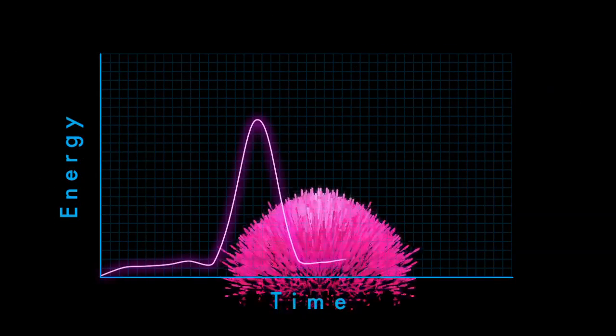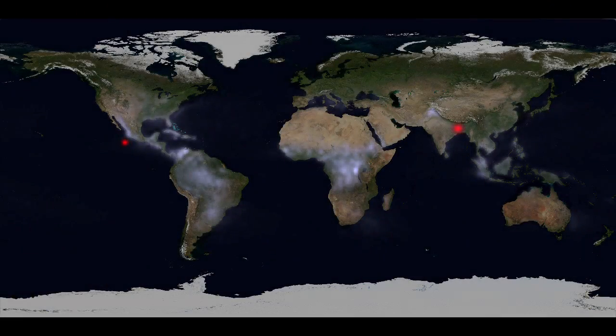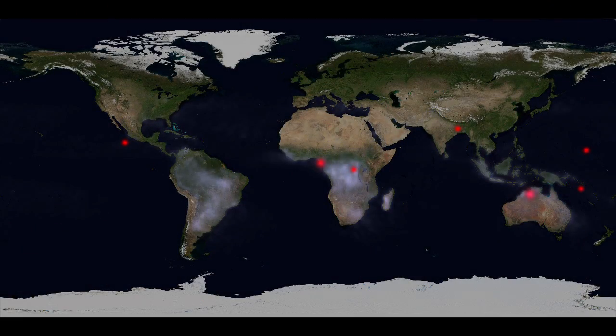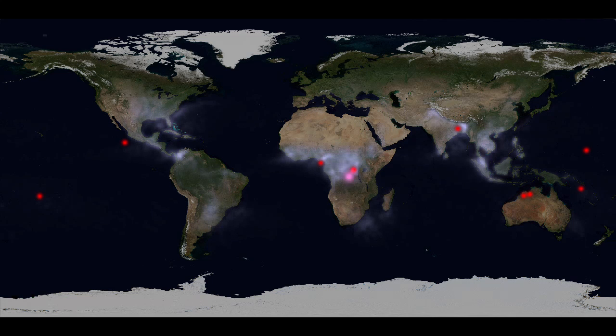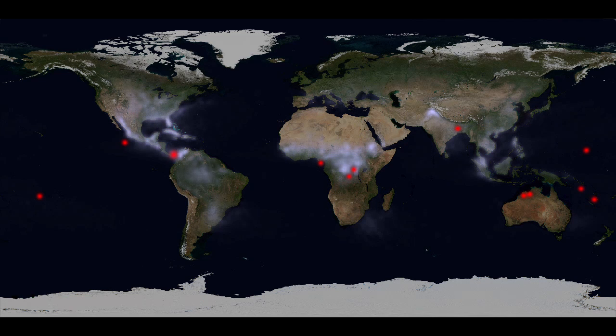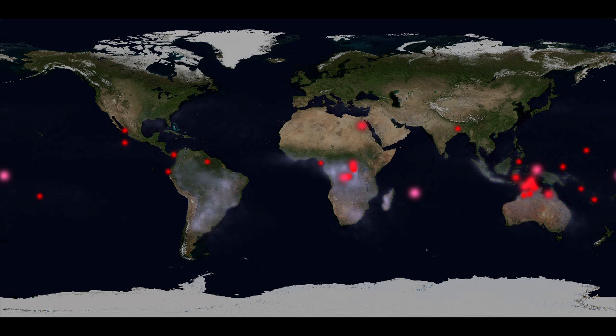The process starts with a terrestrial gamma ray flash, or TGF, an intense pulse of gamma rays originating from thunderstorms. These dots mark TGFs observed by Fermi's gamma ray burst monitor during the spacecraft's first eight months of operations. Researchers estimate that there may be as many as 500 TGFs each day.